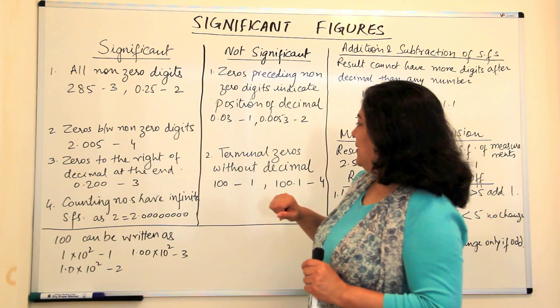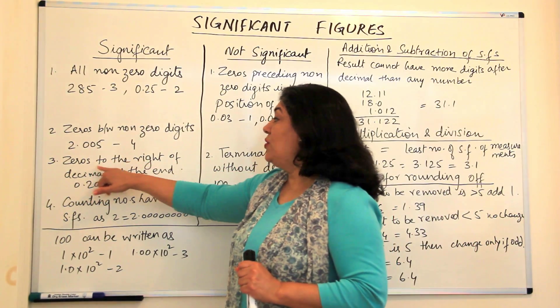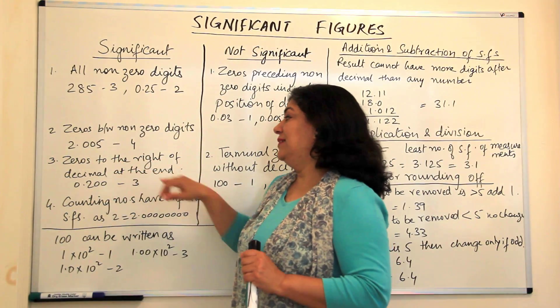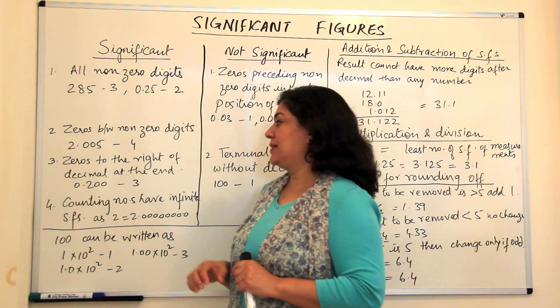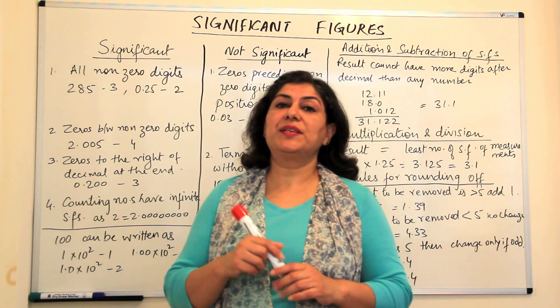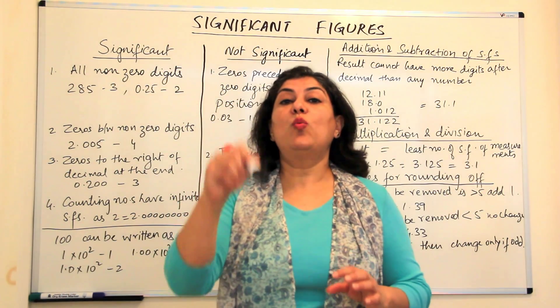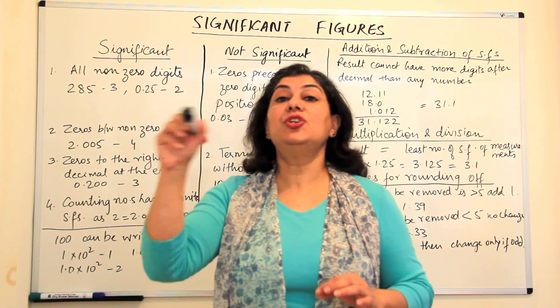Let's come here now. The zeros to the right of decimal, at the end, they should always be significant. If I'm measuring something and I report my reading as 0.100.